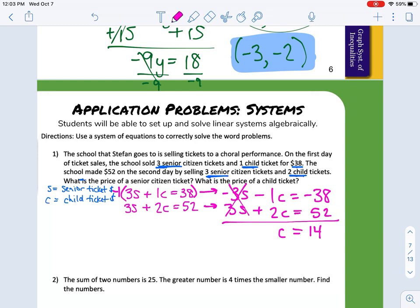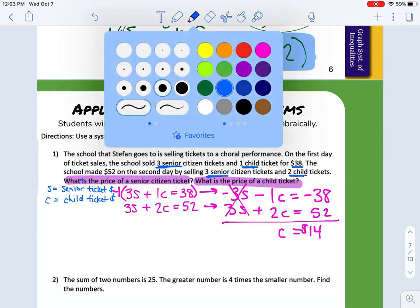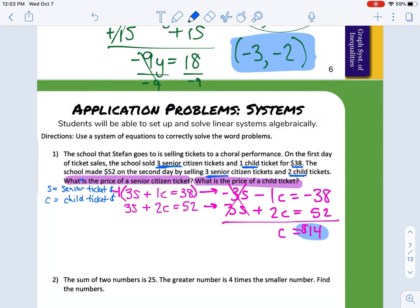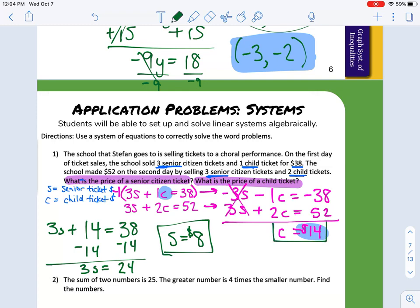That is the price of our children's ticket. Now it says what we're trying to find is the price of the child ticket and price of the senior citizen ticket, so we need to plug that answer for c into one of our two original equations. It doesn't matter which. So I'm going to say 3s + 14 = 38. And then I'm going to solve for s. So s is going to equal 8 dollars. Senior citizen tickets cost $8 while children's tickets cost $14.